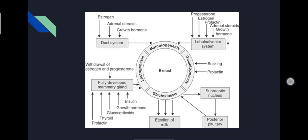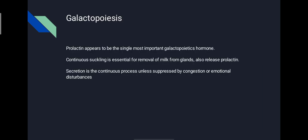Galactopoiesis: prolactin appears to be the single most important galactopoietic hormone. Continuous suckling is essential for removal of milk from the gland and its release. Secretion is a continuous process unless suppressed by congestion or emotional disturbance. A healthy mother will produce about 500 to 800 ml of milk per day, providing about 500 kcal per day. This requires 600 kcal per day for the mother, which must be made up from the mother's diet or from her body stores.